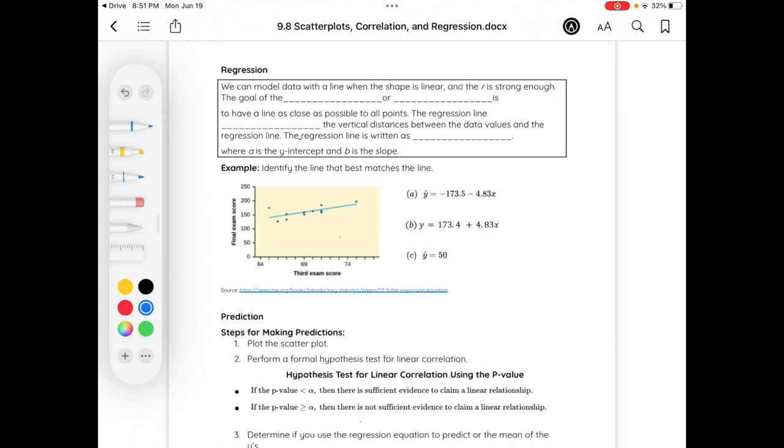Regression analysis is a statistical technique that examines the relationship between a dependent variable and one or more independent variables. It helps us predict the value of the dependent variable based on the values of the independent variables. Simple linear regression involves a single independent variable, while multiple regression deals with multiple independent variables. Don't worry, we're not dealing with multiple independent variables in this lesson. Regression analysis provides insights into the direction and magnitude of the relationship, allowing us to make predictions and test hypotheses. It is widely used in various fields, including economics, social sciences, and business.